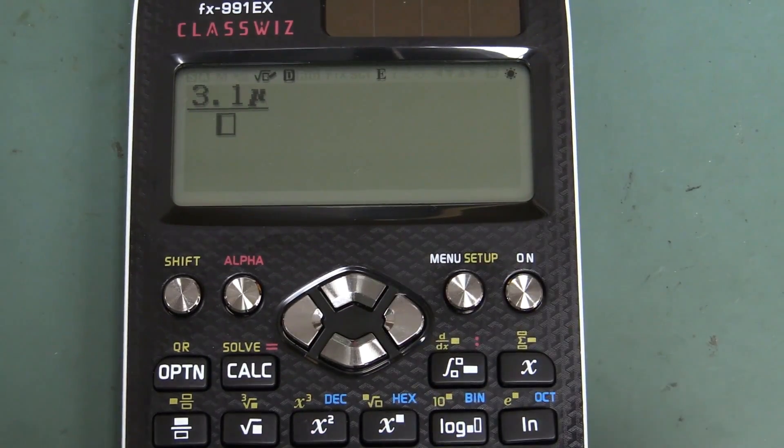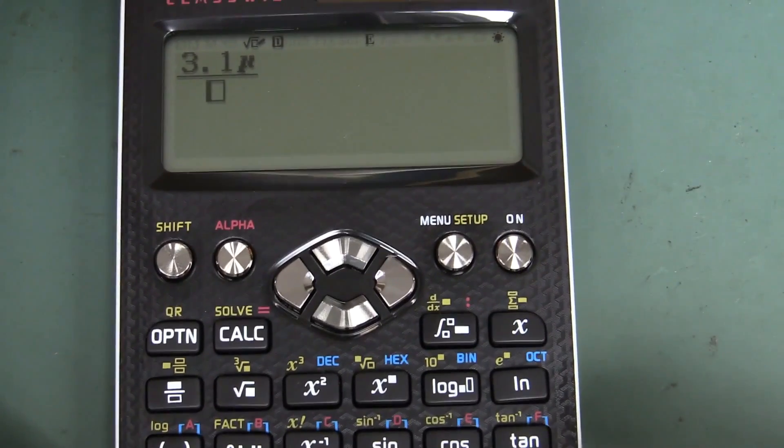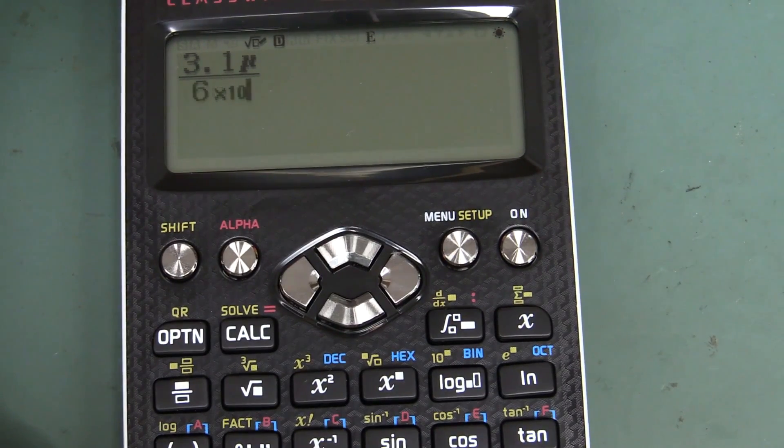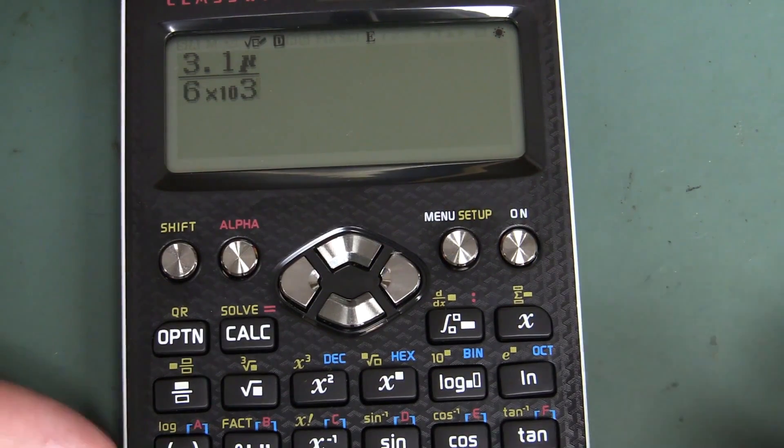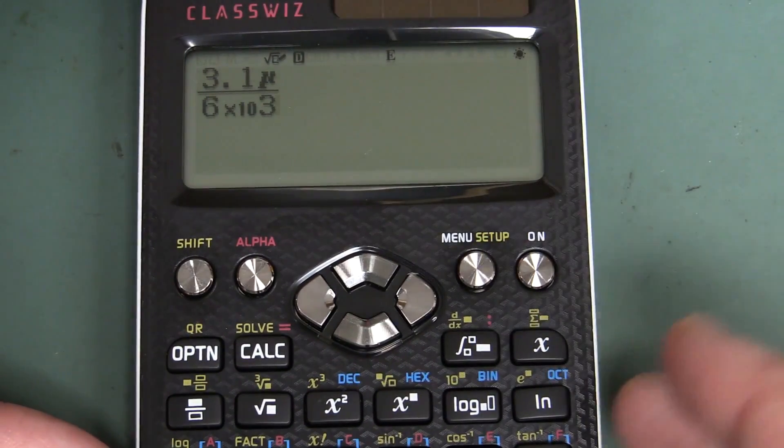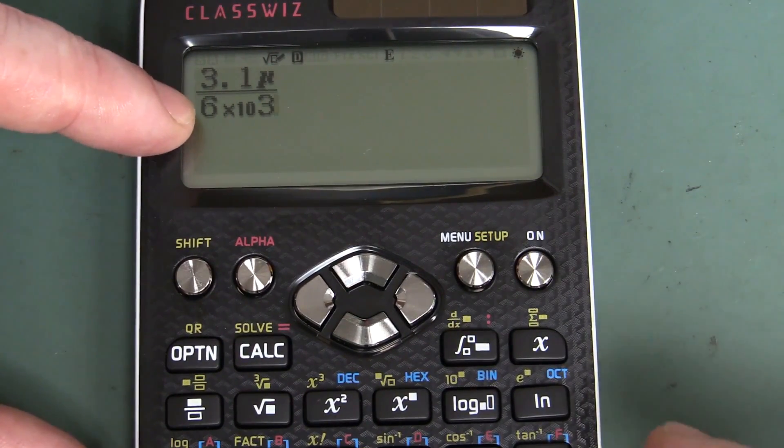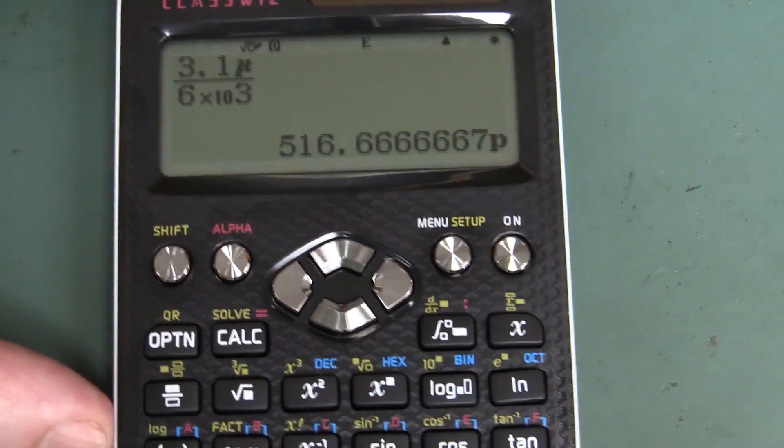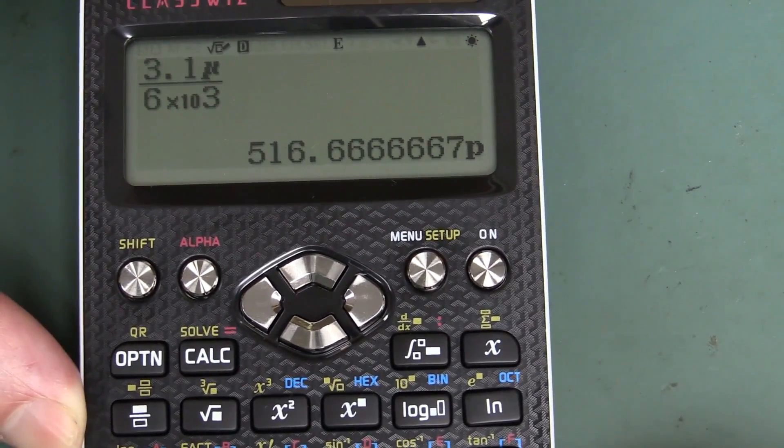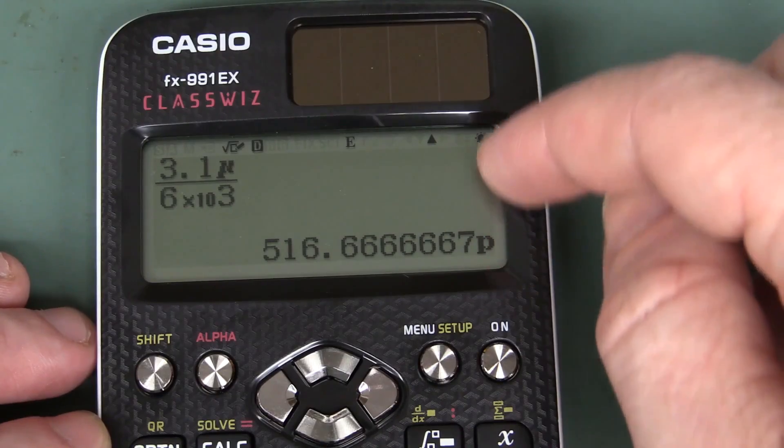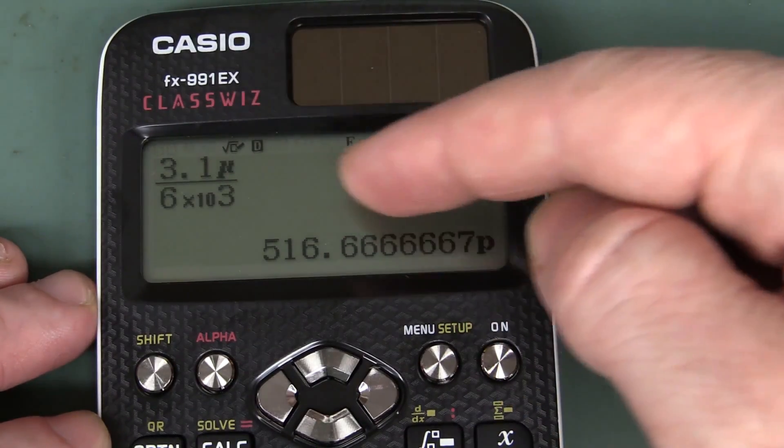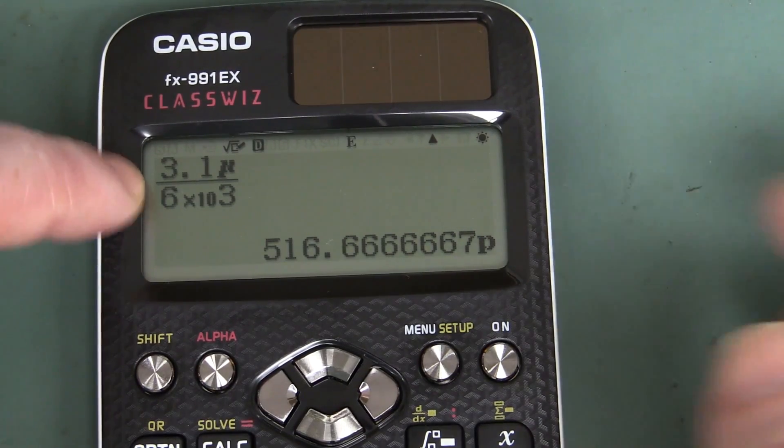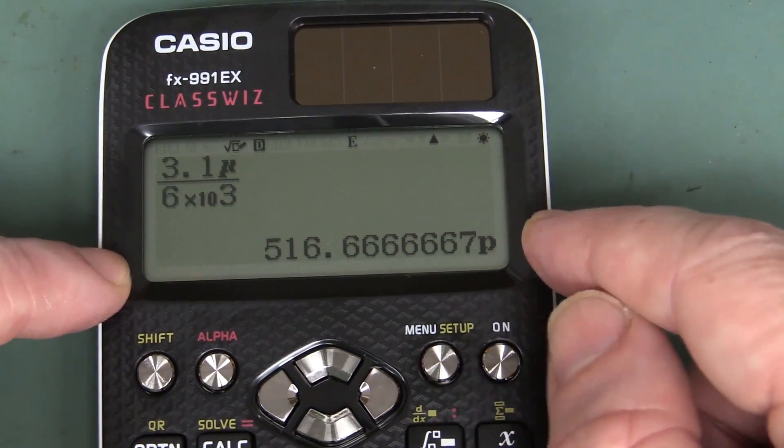So you can do that, and then you can divide by six k, for example, there we go. So I can mix and match the actual units display with your traditional exponent display like that, and then we can get our answer. Bingo, 516 pico. Thank you very much. And I do like the multi-line display, how it actually left your equation up here for you to double-check that you actually entered the right thing, as well as giving you the answer. Fantastic.